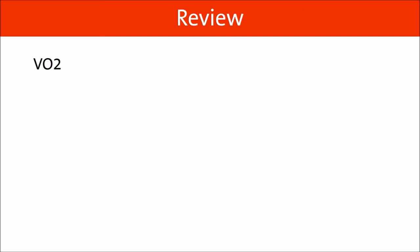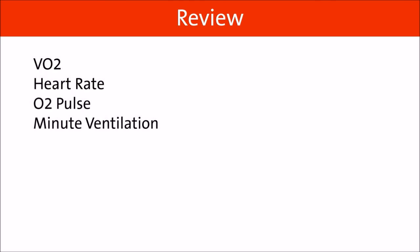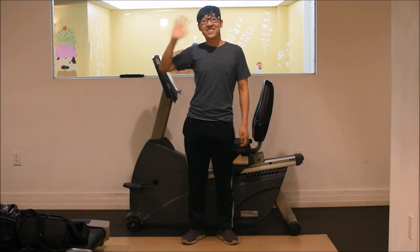So let's review. VO2 is a measure of your exercise capacity. Heart rate being too high indicates low cardiac output; being too low indicates a pulmonary limitation. O2 pulse is a surrogate for your cardiac output. Minute ventilation is how much air is moved in and out in one minute. Ventilatory equivalence is how much air is moved per oxygen and CO2 used. Now your results look pretty good — good job, sport!